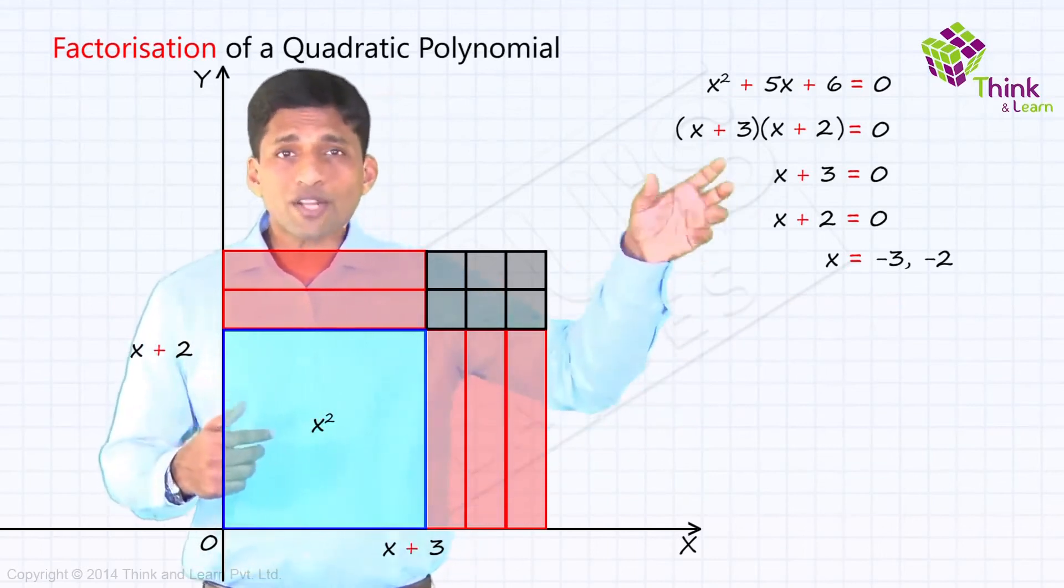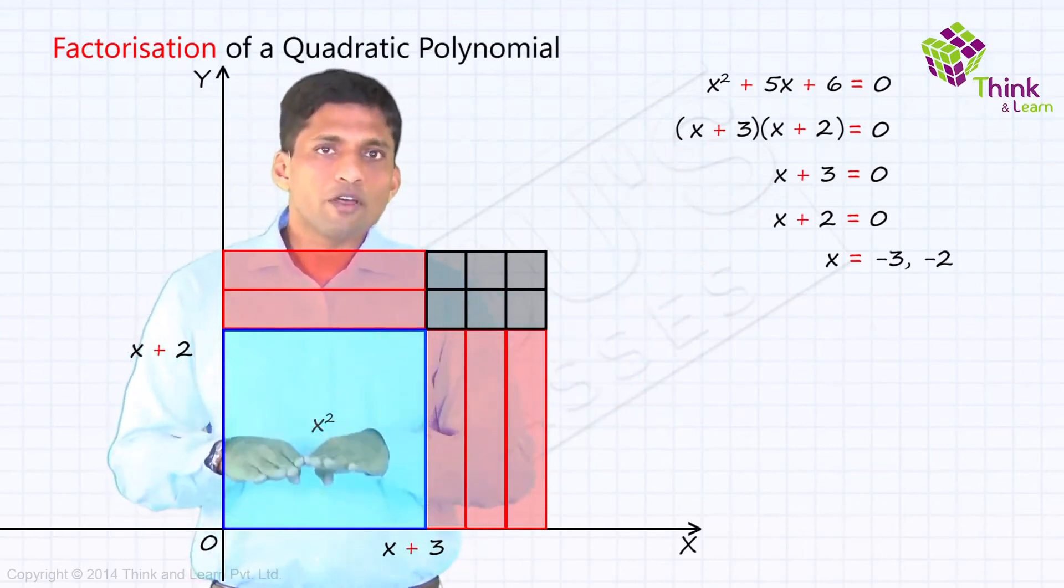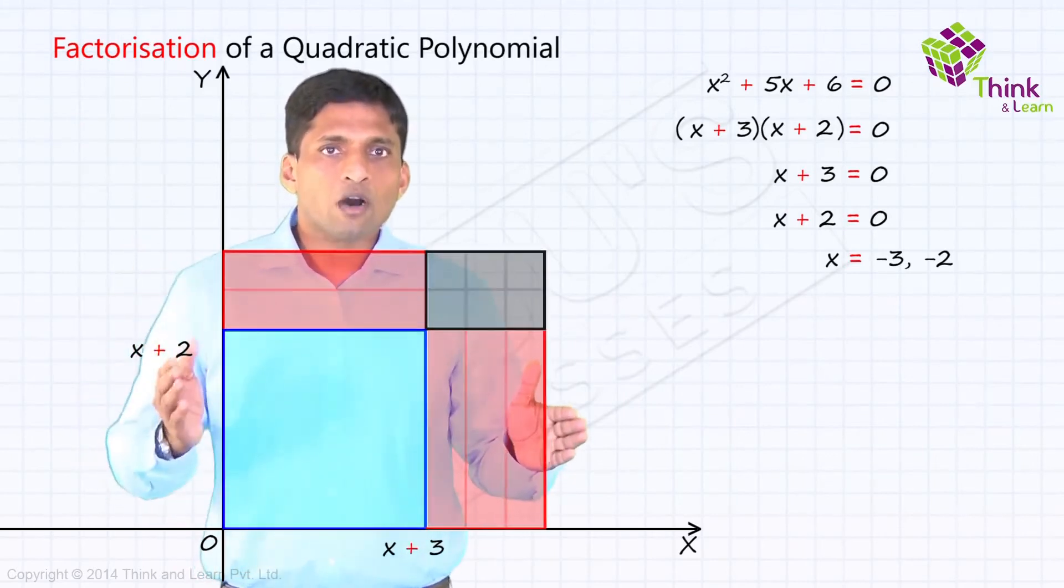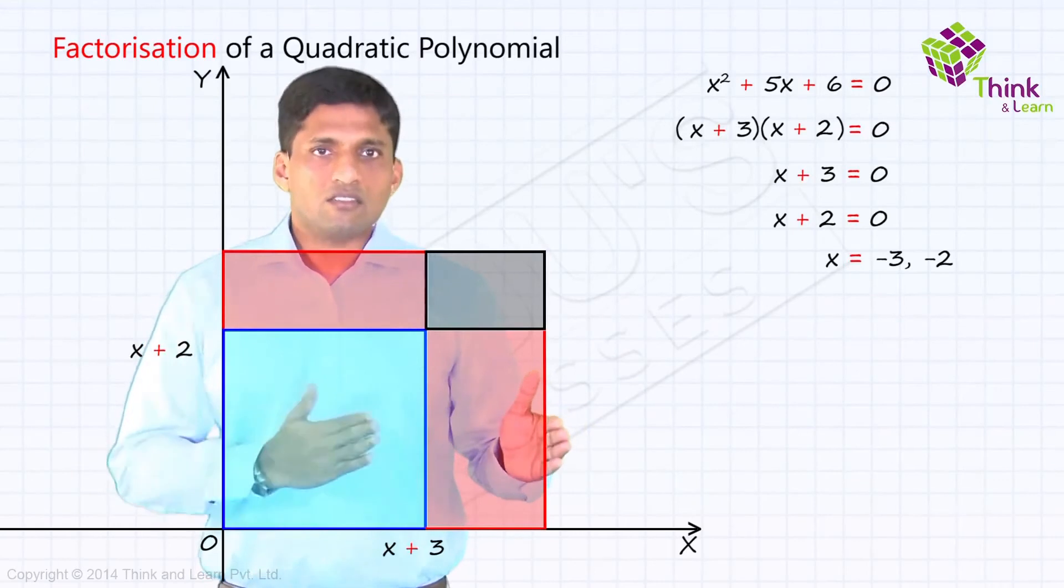Now, how can you visualize even this process? It's interesting. So from this rectangle of length x plus 3 and breadth x plus 2, now I can make length 0.